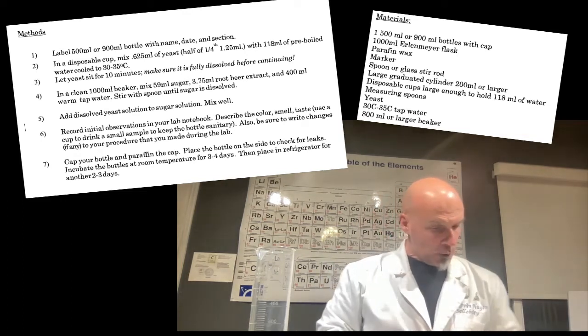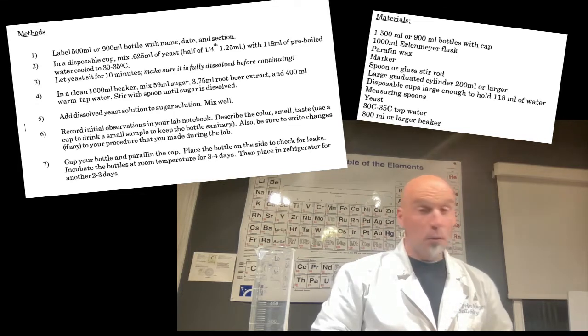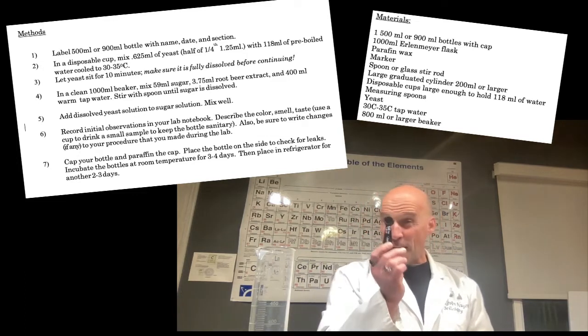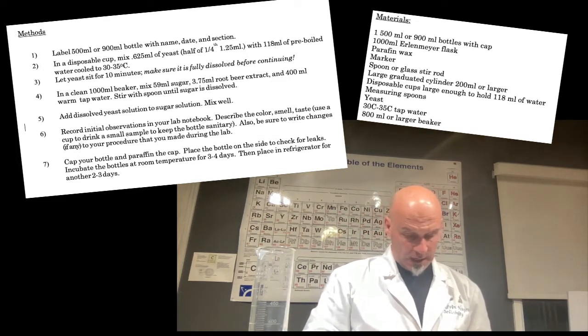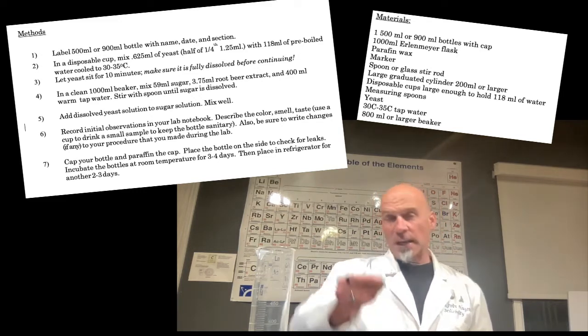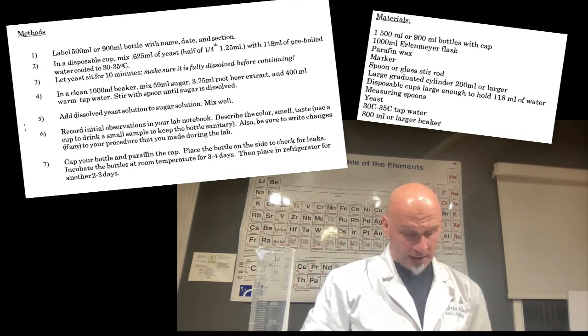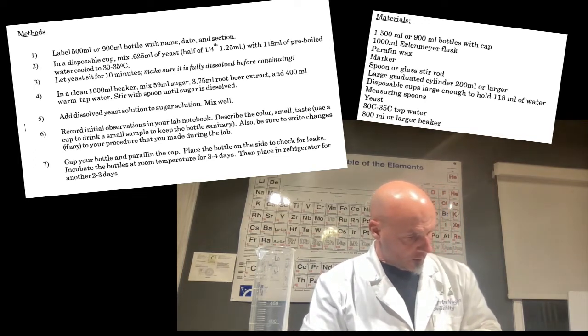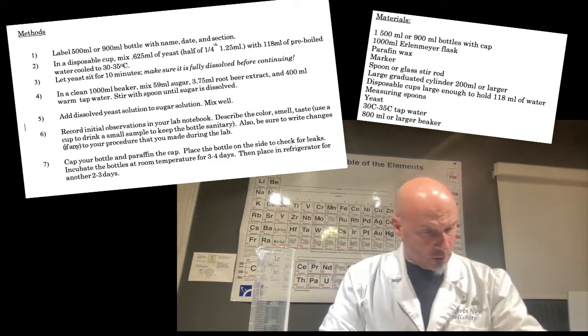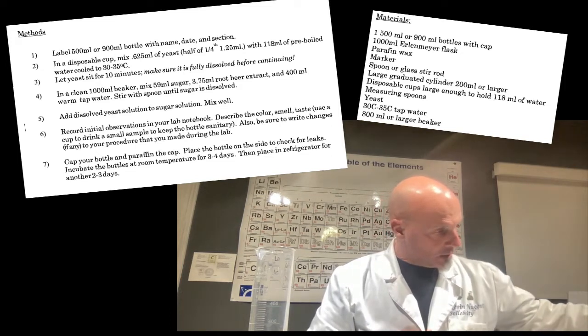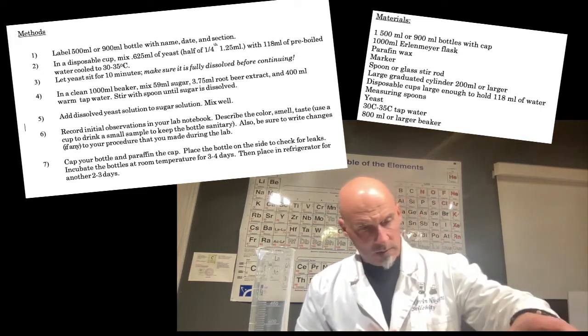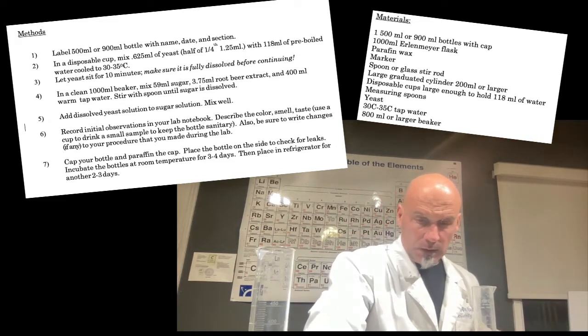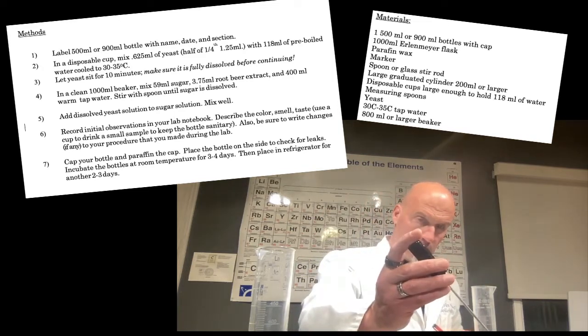Okay, so in your disposable cup, you want to take 0.625, that's 0.625 milliliters, and that's basically half of a quarter teaspoon. So it's not going to be very much. And again, it is going to be virtually impossible to be exact on this, so if you basically fill this halfway, that's going to get you there. So go ahead and add that to the cup.